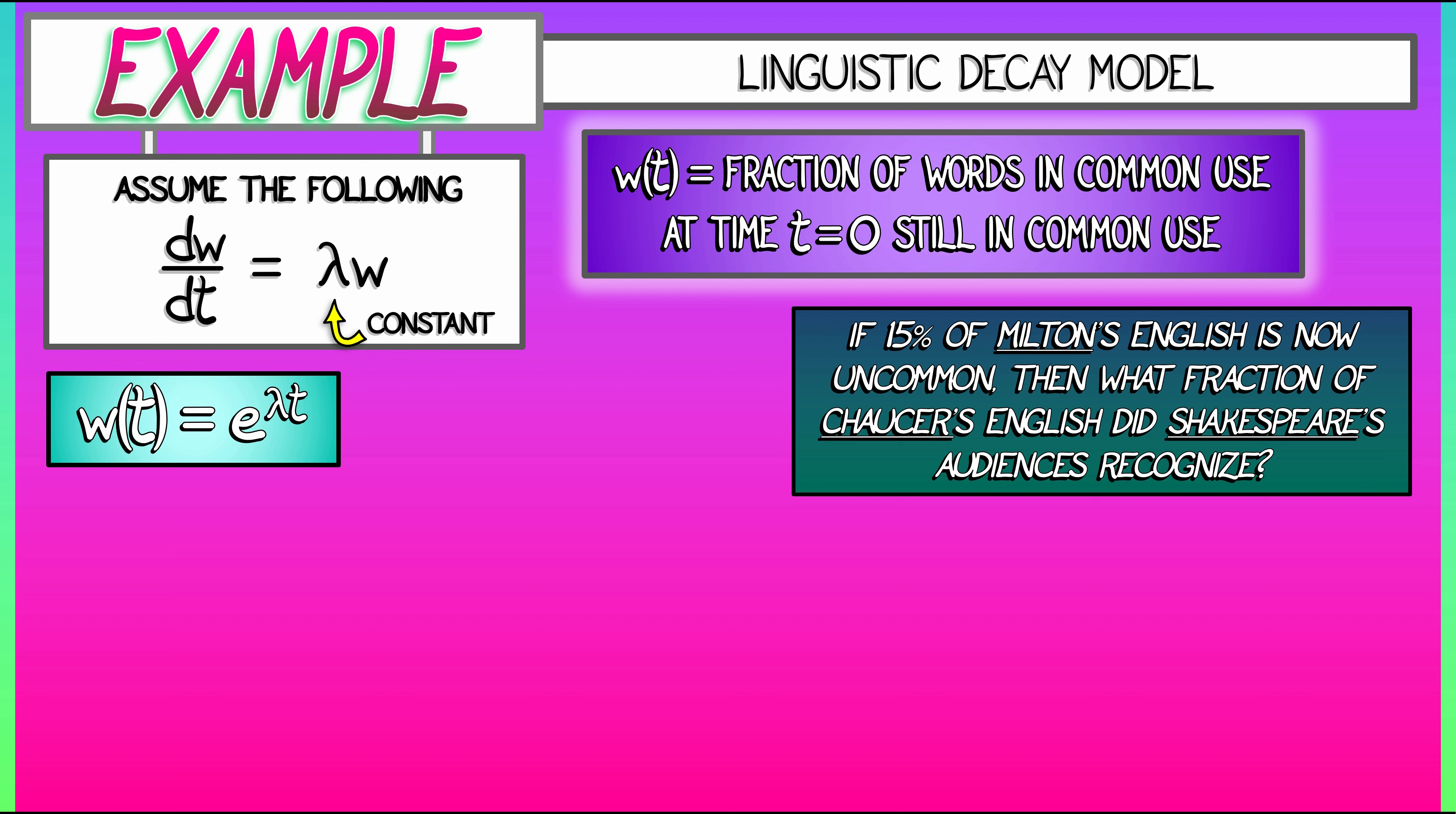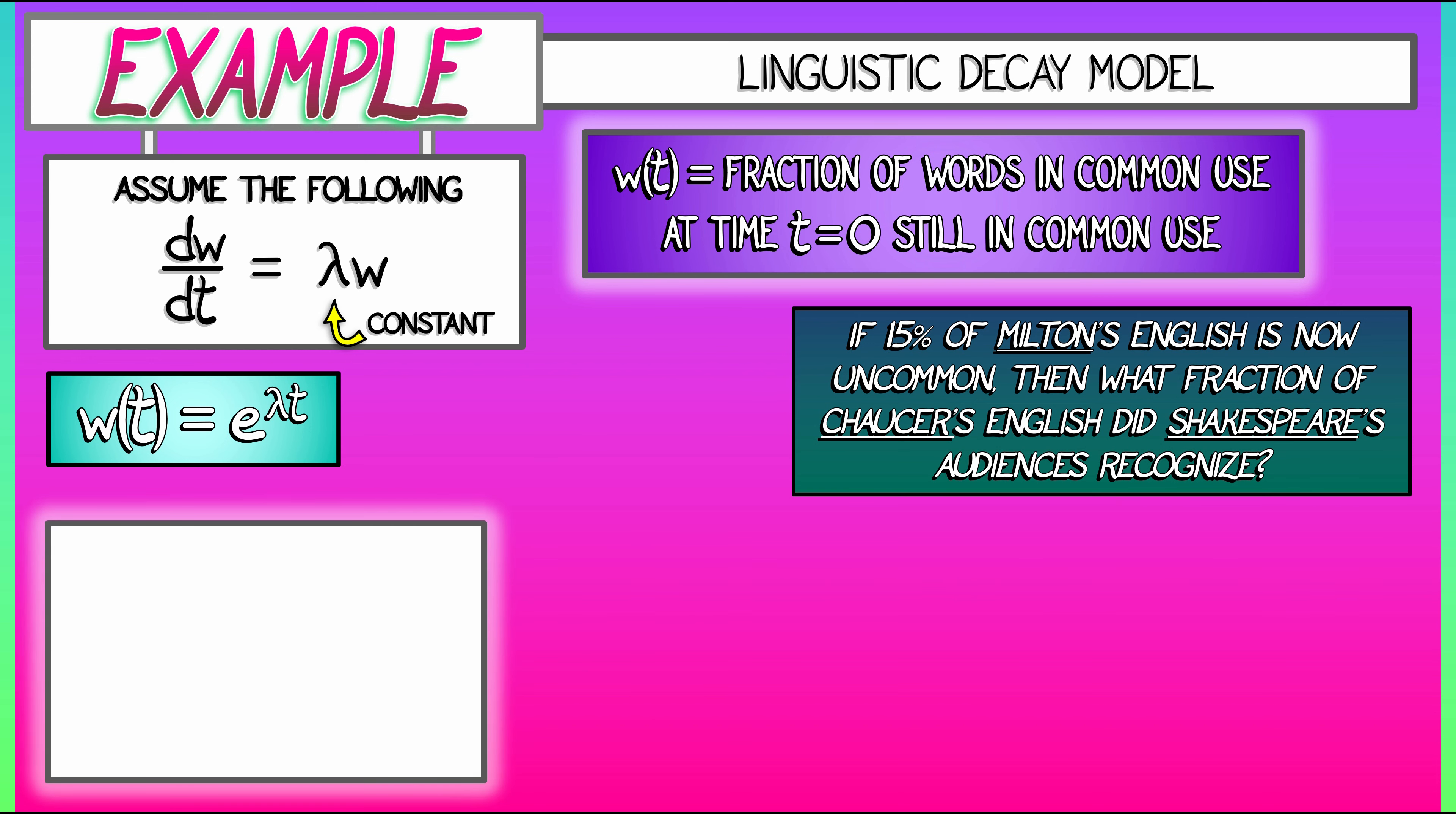Let's nail down some dates. Chaucer is the earliest, writing in about 1400. Shakespeare comes next, his works being written about 1600 or so. Milton in Paradise Lost, that's published in 1666, ironically, the same time that Newton published his calculus. And then we have the present day, which is 2022.